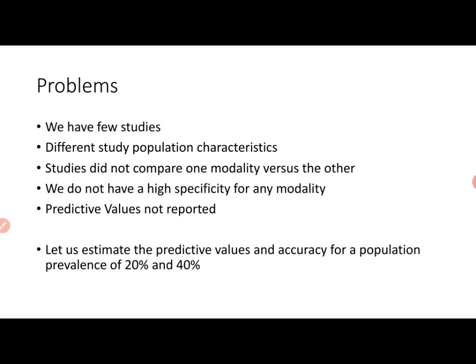To recap: different study population characteristics. The most important thing — if you look only at sensitivity and specificity — is that we miss the fact that the studies did not compare one modality versus the other. The CT scan studies compared CT with no image; the chest radiograph studies compared chest radiographs with no image. So we don't have an idea of how one test compares with the other — whether one is superior, equivalent, or inferior. We also see that predictive values have not been reported, but they can be estimated using the sensitivity, specificity, and prevalence.